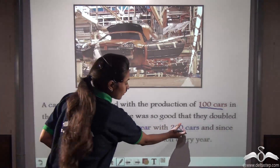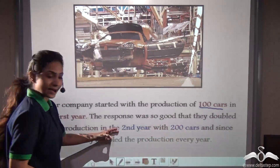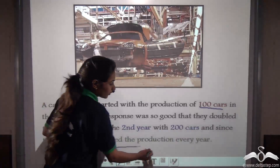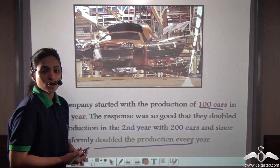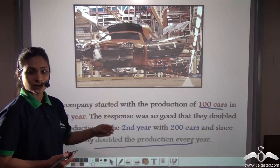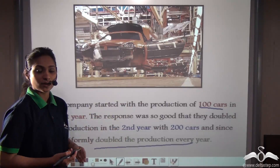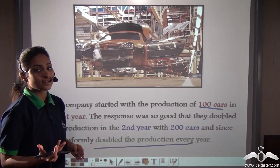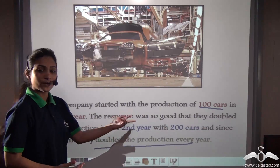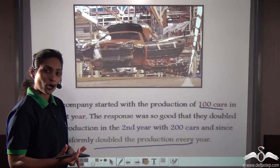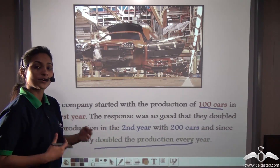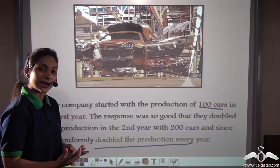With two hundred cars in the second year, and since then uniformly doubling the production every year: hundred in the first year, two hundred in the second year, four hundred in the third year, and eight hundred in the fourth year — again doubled each time.